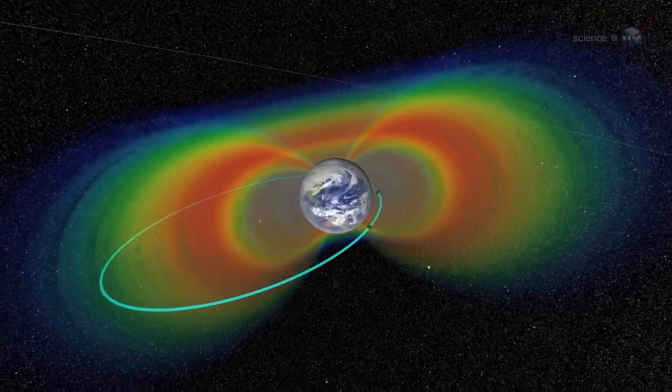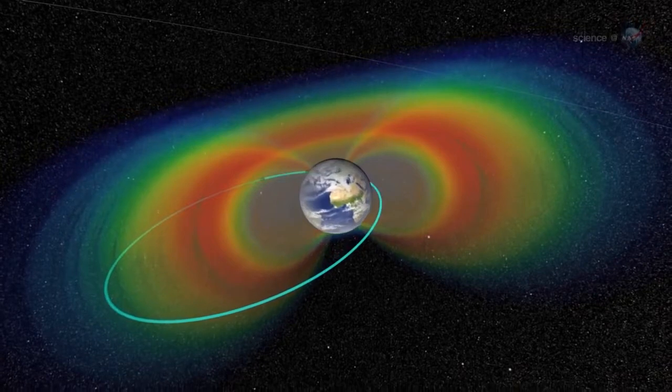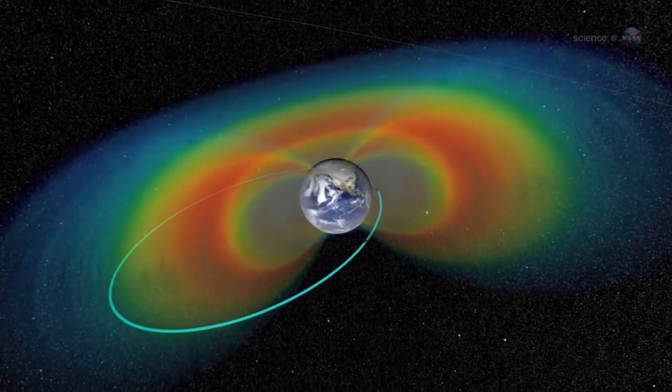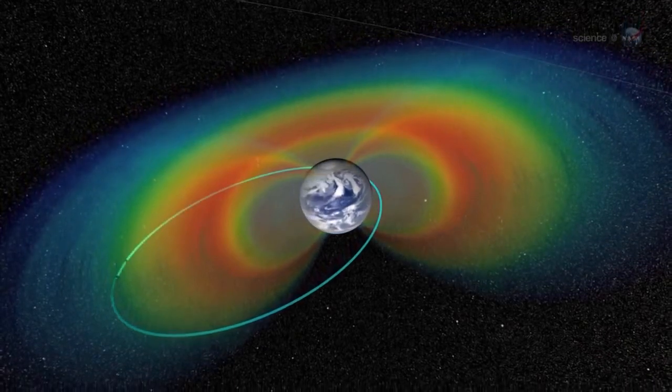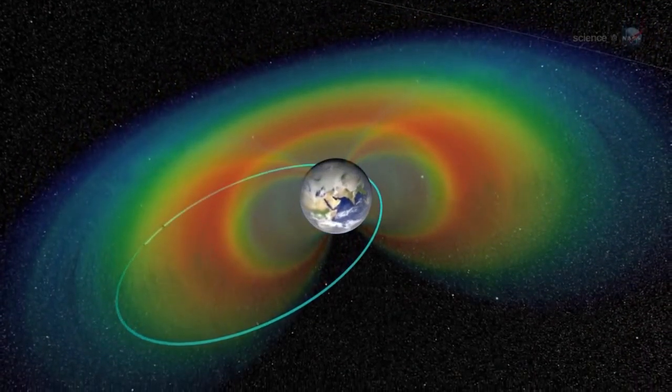One of the things we don't know is how broad the region is over which chorus occurs. The widely separated stereo capability of the storm probes will give us the ability to figure this out, he explains. With a two-year mission planned for the storm probes, the Earth song is just getting started.